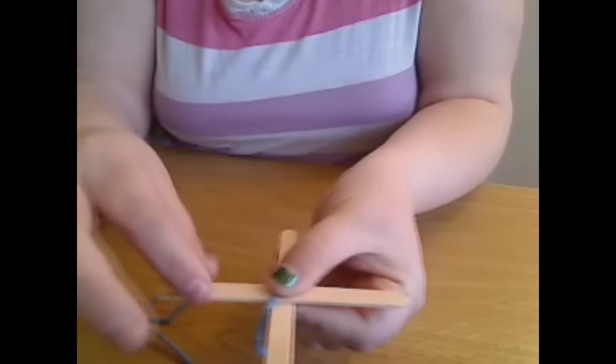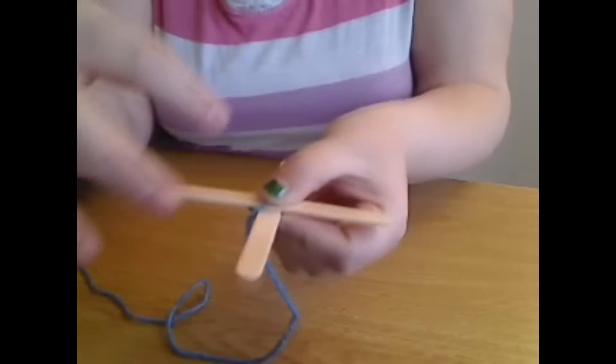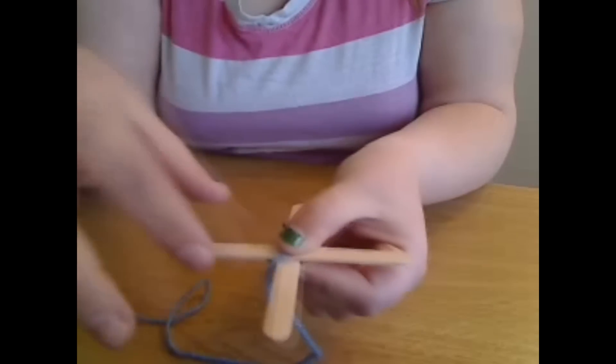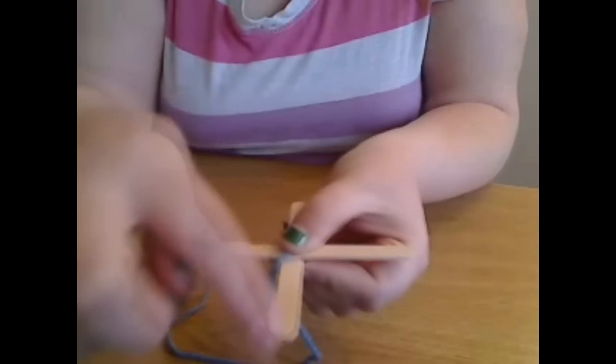Try to keep your popsicle sticks in place as you thread the yarn over your popsicle sticks, so they don't move and stay about the same length across.